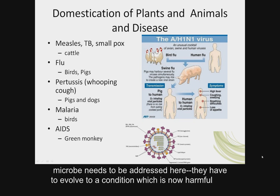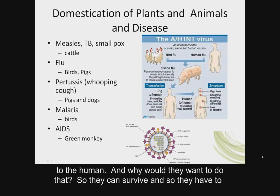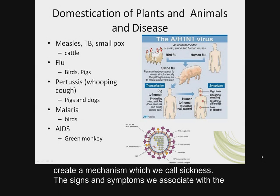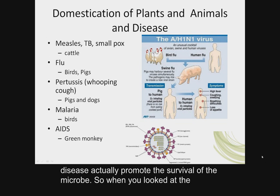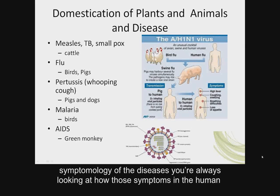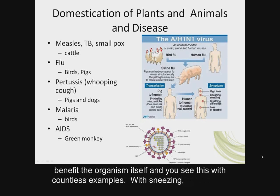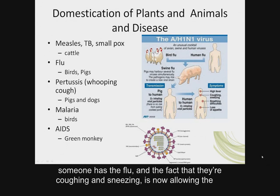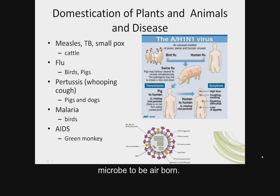The evolution of the microbe needs to be addressed here. They have to evolve to a condition which is now harmful to the human. Why would the microbe want to do that? So they can survive and create a mechanism which we call sickness. The signs and symptoms we associate with disease actually promote the survival of the microbe. When you look at the symptomology of diseases, you're always looking at how those symptoms in the human benefit the organism itself. For example, sneezing when someone has the flu allows the microbe to become airborne.